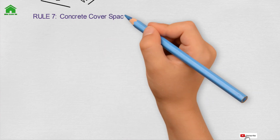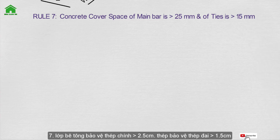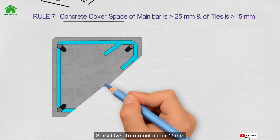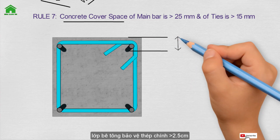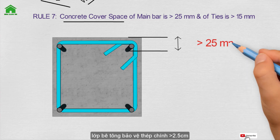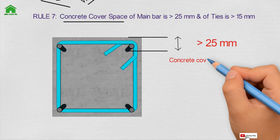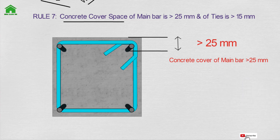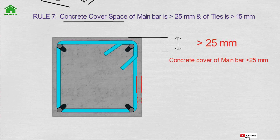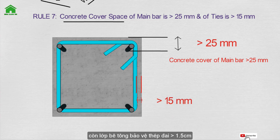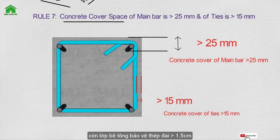Rule number seven: the concrete cover for the main bars should be over 25 mm, and the concrete cover for the ties should be over 15 mm. This space is the concrete cover — main bar cover over 25 mm, and concrete cover of ties over 15 mm.